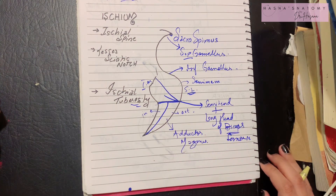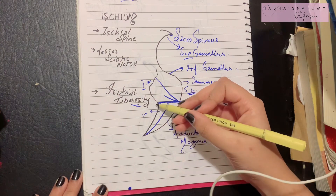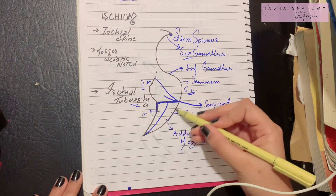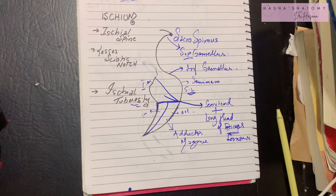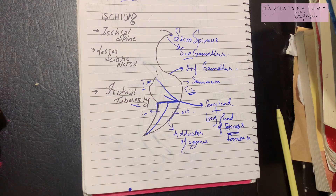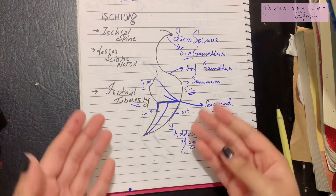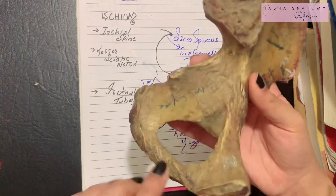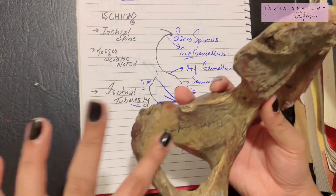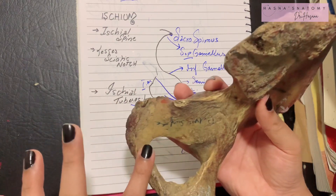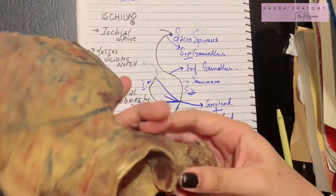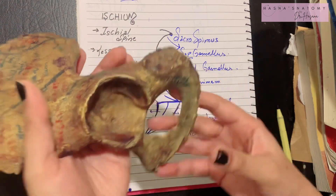On the lateral margin of the ischial tuberosity arises the quadratus femoris muscle, and on the medial margin arises the sacrotuberous ligament. Additionally, the obturator internus arises from the ischial part, and finally the obturator externus also attaches here.